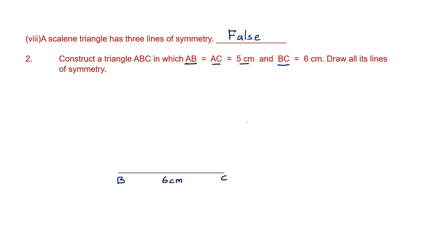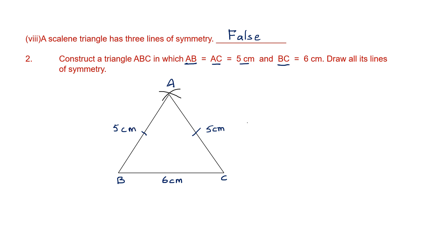Take your compass, measure 5 centimeters on the ruler, place it on B and draw an arc straight above. With the same measurement, place it on C and cut this arc. The point where the two arcs meet is named A. Draw a line from A to B and from A to C to complete the isosceles triangle with both sides equal to 5 centimeters.